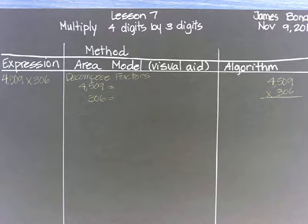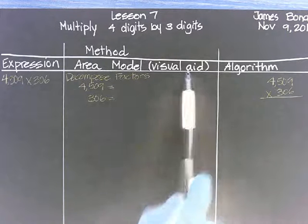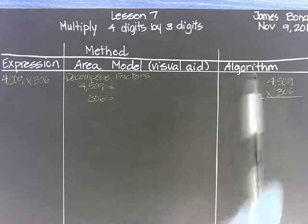Hello, my friends. Welcome to another episode of Eureka Math. Today, we are multiplying four digits by three digits, multiplying using the area model, which is your visual, and the algorithm. All right, let's get to it.